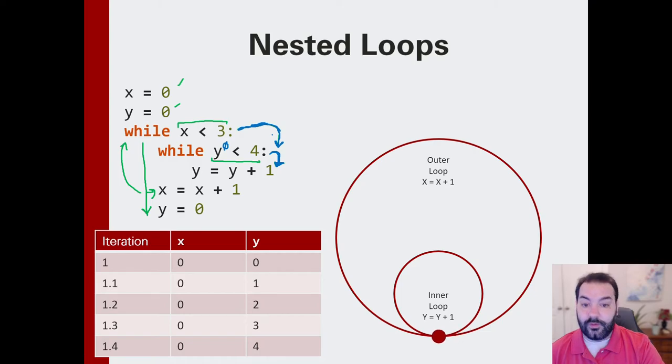So y just became one. We continue with this loop. Is one less than four? Yes. So we run through that inner loop a second time. y becomes two. Two is still less than four. We run through it again. We run through it again. And as you can imagine, now what we would do is we exit out of our while loop.